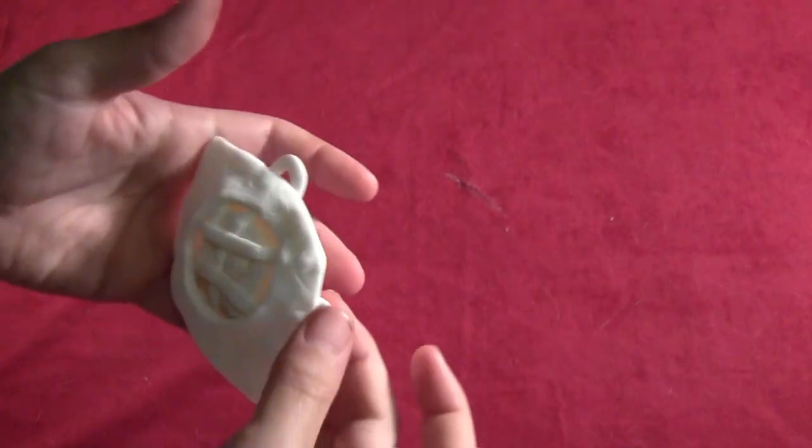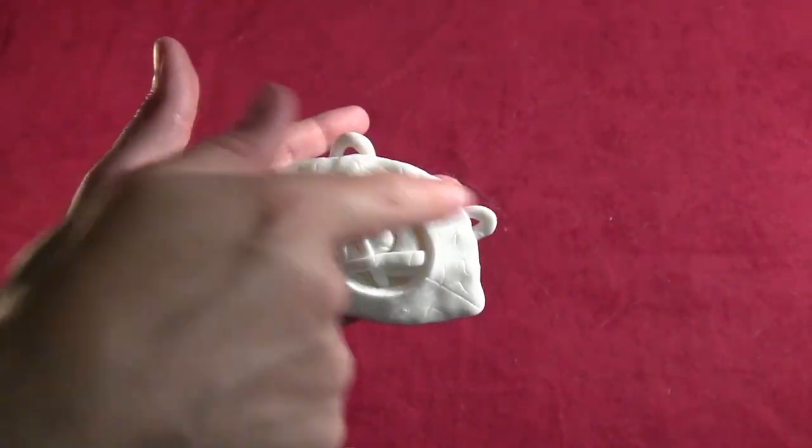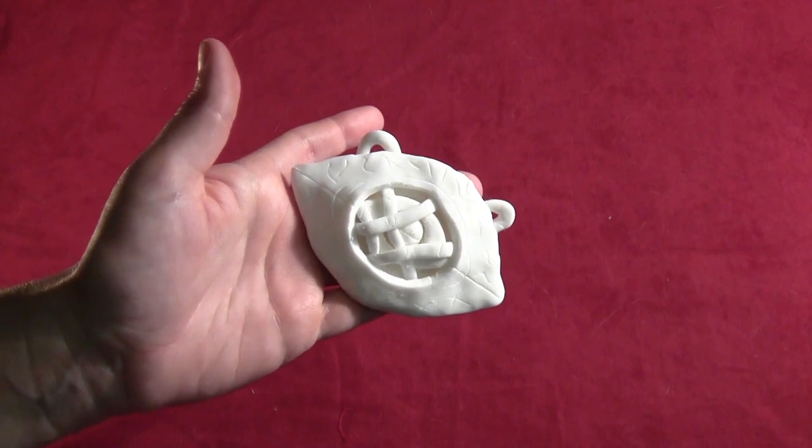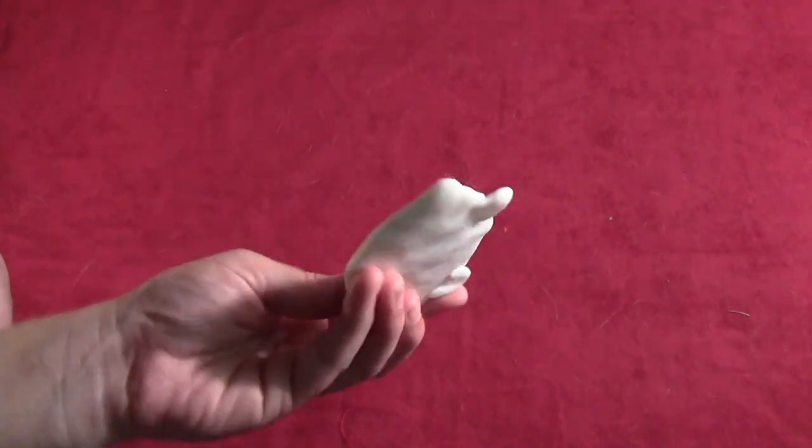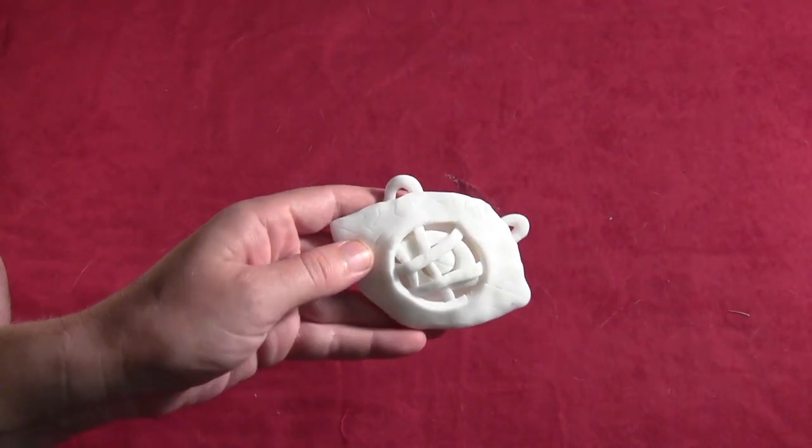So then you just want to cook your clay for as long as the package tells you and let it harden. I was originally going to put some clay loops on to connect the chain to but I ended up accidentally breaking them off. So just ignore those.